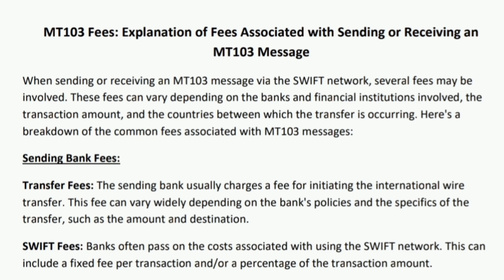Here is a breakdown of common fees associated with MT103 messages. First are sending bank fees. These include transfer fees and SWIFT fees. Transfer fees: the sending bank usually charges a fee for initiating the international wire transfer; these fees can vary widely depending on the bank's policies and specifics of the transfer such as the amount and destination. SWIFT fees: banks often pass on the cost associated with using the SWIFT network, which can include a fixed fee per transaction and/or a percentage of the transaction amount.